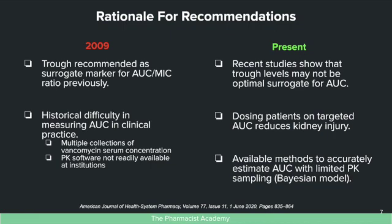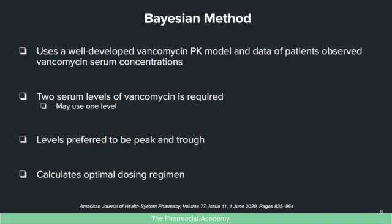Studies also found that patients targeted using AUC-guided dosing had reduced risk of kidney injury compared to trough-only monitoring, which some studies showed did not actually reduce the risk of kidney injury. Additionally, there are now several methods to accurately estimate the AUC with limited pharmacokinetic sampling, meaning you don't need multiple vancomycin level collections. The specifically recommended method is the Bayesian model.